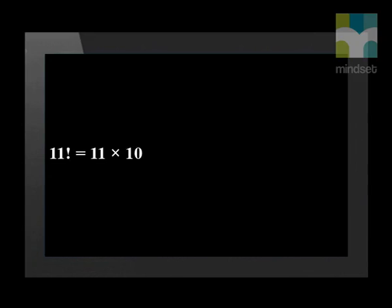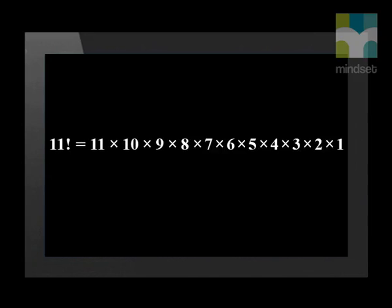This calculation can be applied to many different real-life situations. For example, in how many different ways could we arrange the batting order of a team of cricketers? Remember that there are 11 batsmen. There are 11 batsmen who could bat first. Once the first batsman is chosen, there are 10 who could bat in the second position, 9 available for the third, and 8 for fourth. This pattern continues until the last position where there will only be one person available. Thus, 11 factorial gives us 39,916,800 different batting orders for 11 players.